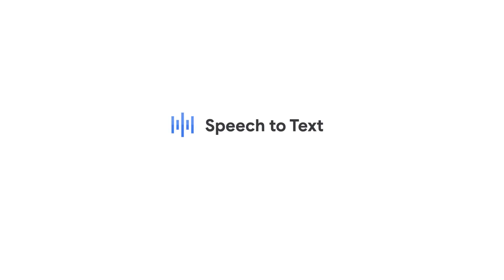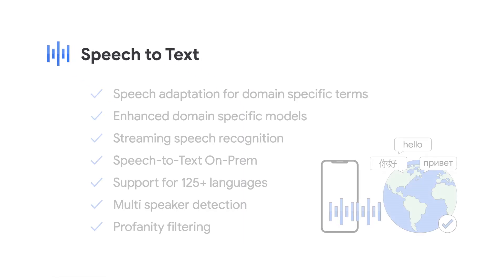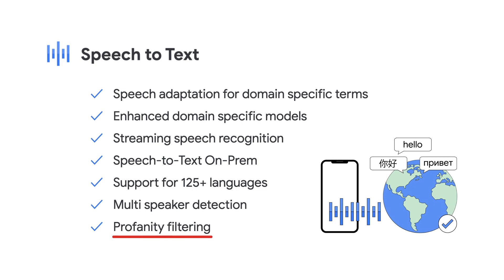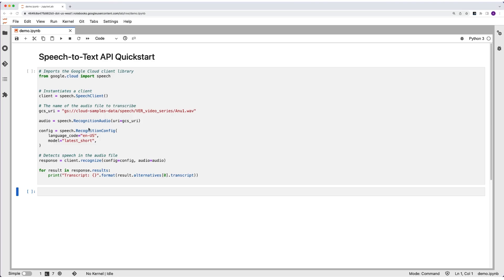We'll be using the Speech-to-Text API, which allows you to accurately convert audio to text. Some of the highlights of the service are multi-speaker detection if you have a recording of several people conversing, streaming speech recognition, profanity filtering, and support for over 125 languages. Fun fact — it's available on-prem as well. To start, let's run a sample with the API to see how it works.